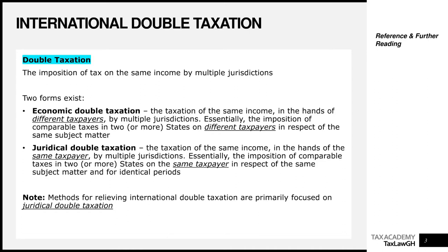What is the key difference between these two forms? Under economic double taxation, this is the taxation of the same income in the hands of different taxpayers by multiple jurisdictions. Essentially, it's the imposition of comparable taxes in two or more states on different taxpayers in respect of the same subject matter. The distinguishing factor is that we are taxing the same income, but it's in the hands of different taxpayers — not the same person.